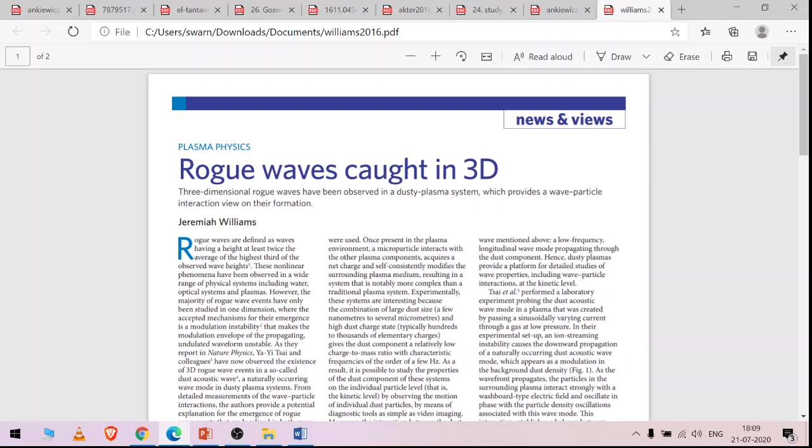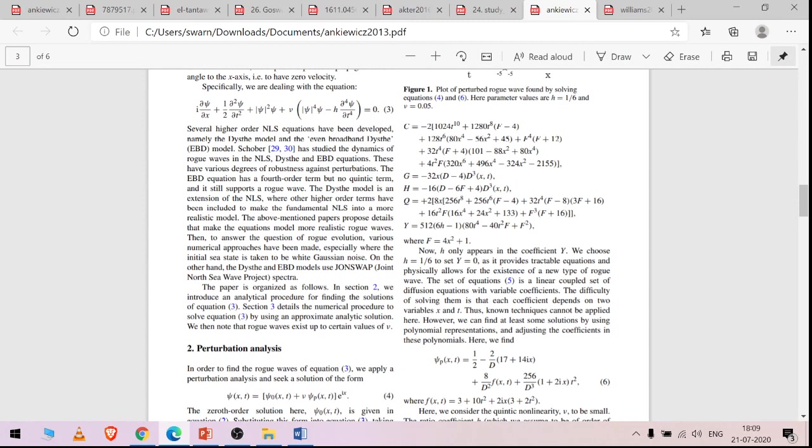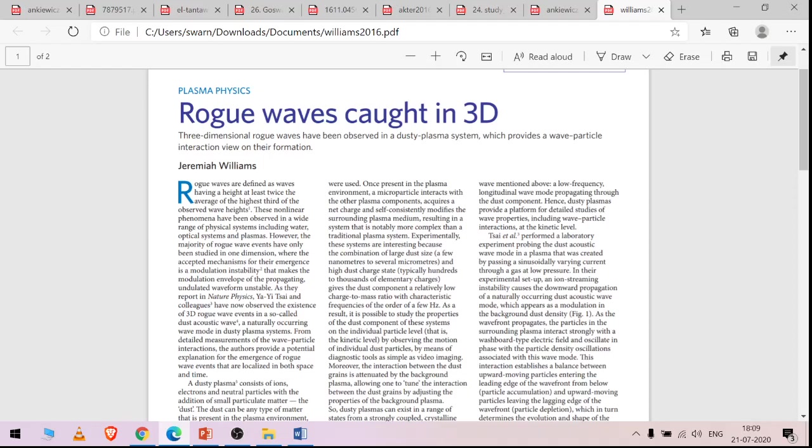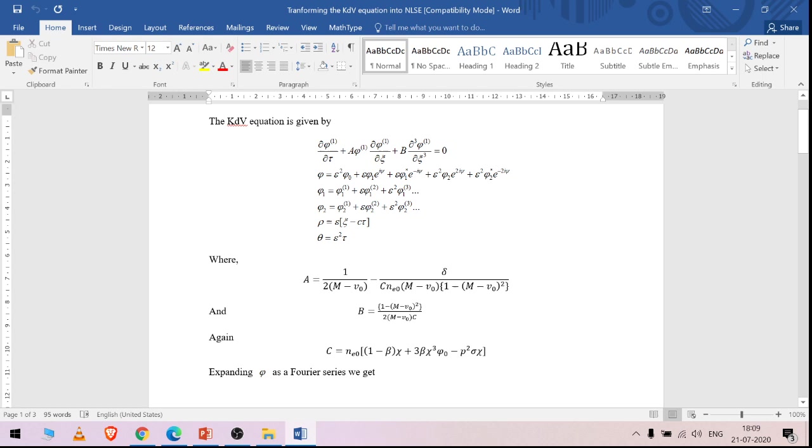The dusty plasmas are available in astrophysical plasmas, in laboratory produced plasmas, Saturn's rings, and comet tails—these are dusty plasmas. Generally space plasma that incorporates space debris are dusty plasmas. Now there are some articles available on how to study the dusty plasma rogue waves through the nonlinear Schrödinger equation.